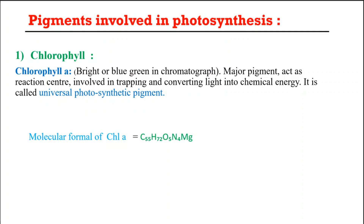First of all, chlorophyll. We divide chlorophyll into different parts like chlorophyll A, chlorophyll B, chlorophyll C, D and so on. There are also special type chlorophyll molecules which are present in bacteria. We call them bacterio-chlorophyll A, chlorophyll B, chlorophyll C and so on.